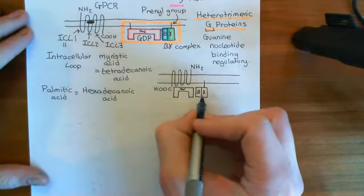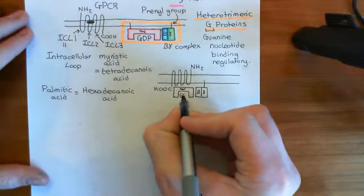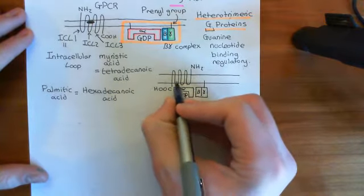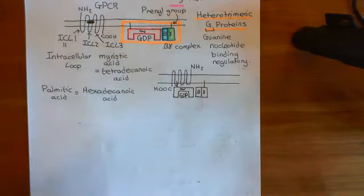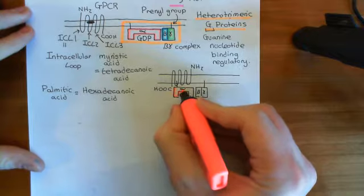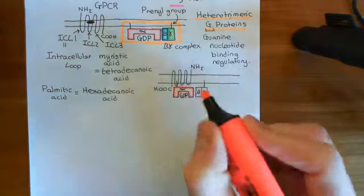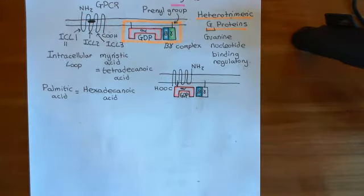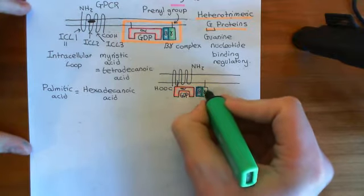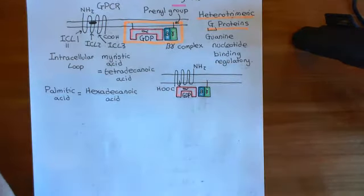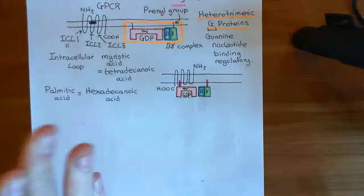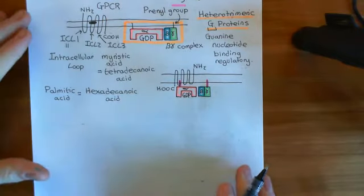The condition for the alpha subunit to have the beta-gamma complex with it is that the alpha subunit has GDP bound — i.e., it's in the off state. The lipid moieties of both the alpha subunit and the beta-gamma complex keep the entire heterotrimeric G protein anchored to the inner leaflet of the phospholipid bilayer.